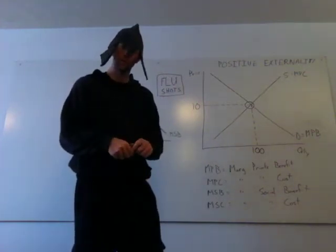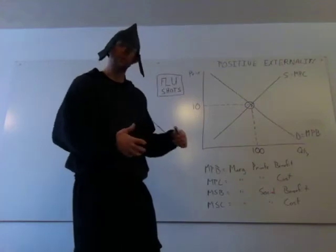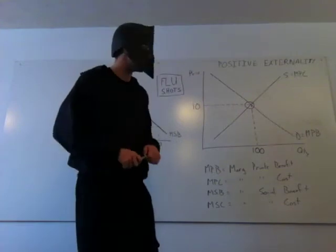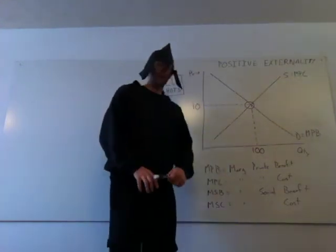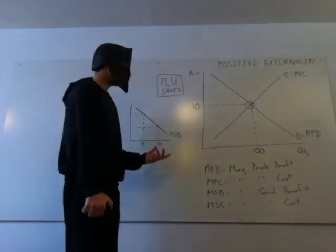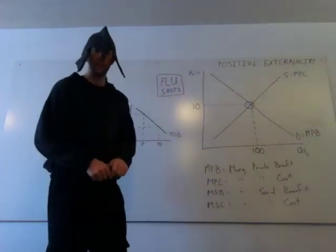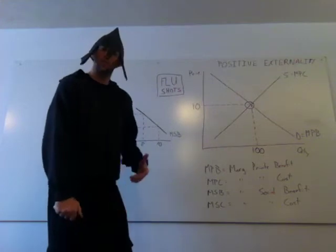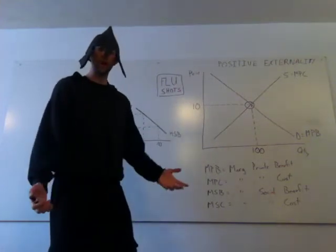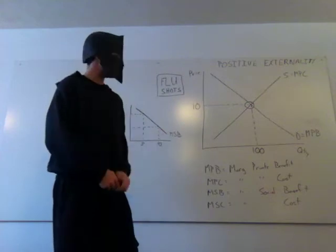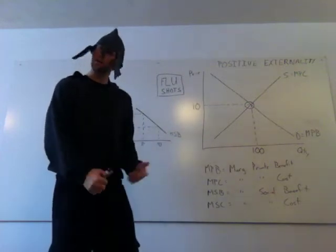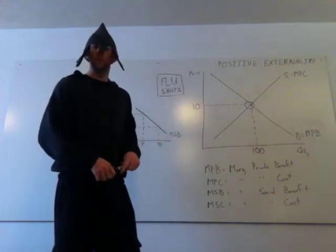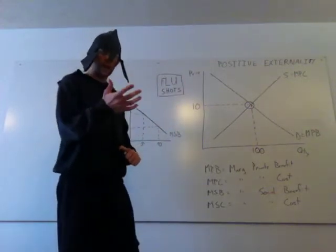We're dealing with externalities right now. We've talked about them a little bit. I want to look at the graphs because the graphs are the things you guys seem to understand the general idea, but the graphs is where it gets a little bit trickier. So we got a positive externality here. We've talked about a couple examples. We're going to use flu shots, vaccines, as our example. If you look, I've got this graph drawn right now. You've seen this a million times, just a regular supply and demand graph with an equilibrium and a price and quantity.